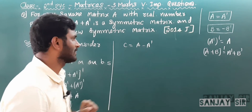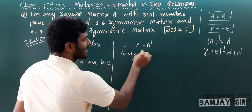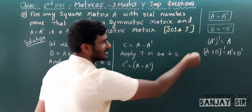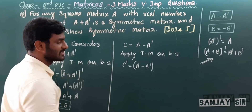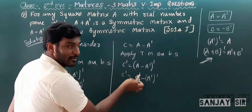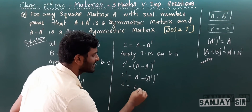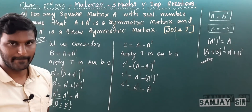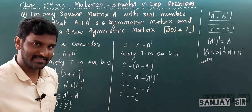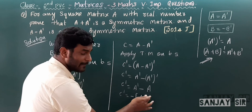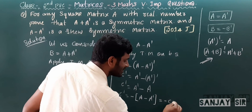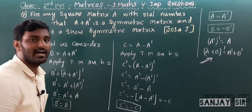Apply transpose on both sides: C' = (A − A')'. Using the property of transpose, C' = A' − (A')' = A' − A. Taking minus as common: C' = −(A − A'). But A − A' = C, so C' = −C. Therefore C' = −C is our required answer.